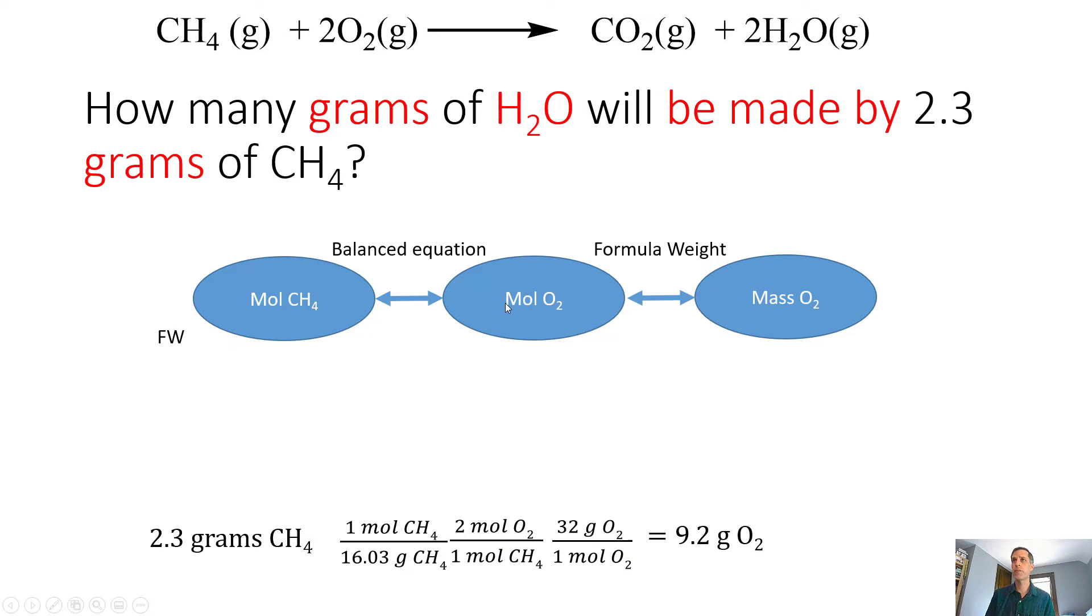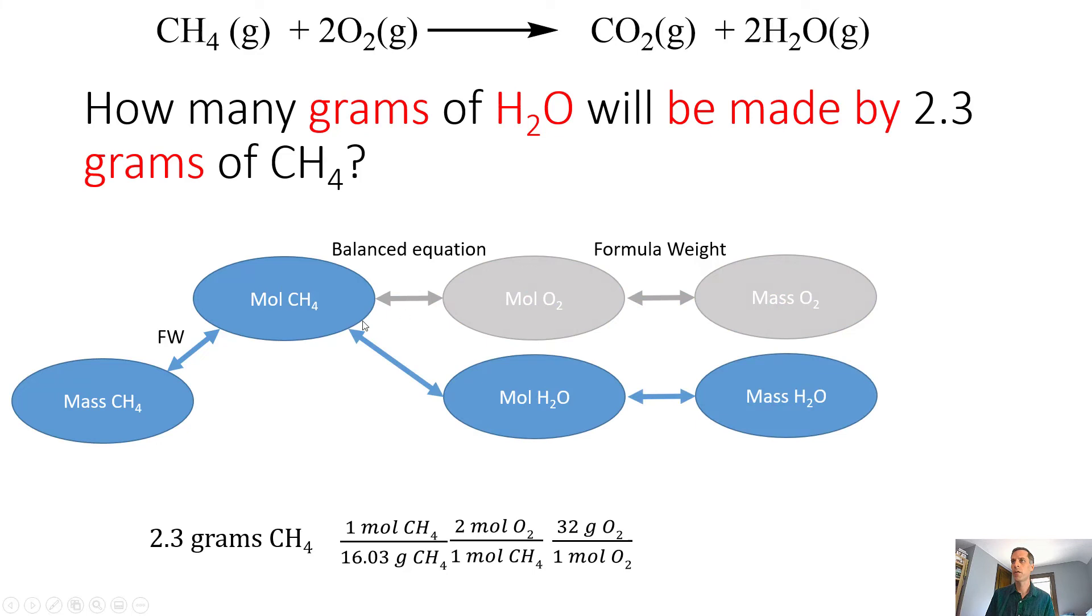Of course, this could be even a little bit harder. It could be: how many grams of water will be made by 2.3 grams of methane? We still have to start over here on the methane, we go through the same piece. But now we want to get to mass of water, so we need to do a little bit of a change here. Some of those pieces aren't going to be relevant, so we can shade those out.